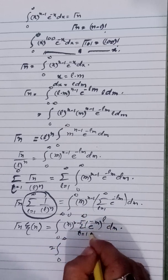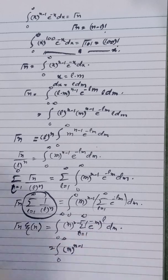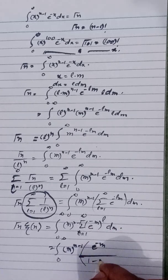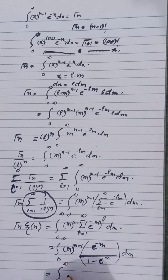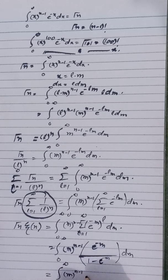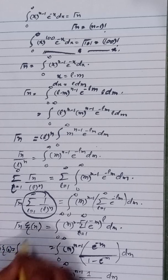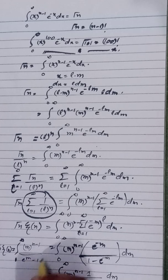The summation of e^(-lm) from l=1 to ∞ is an infinite geometric series with first term a = e^(-m) and common ratio r = e^(-m). Using the formula a/(1-r), this sum equals e^(-m)/(1 - e^(-m)). Multiplying numerator and denominator by e^m gives 1/(e^m - 1). Therefore, Γ(n)·ζ(n) = ∫₀^∞ m^(n-1)/(e^m - 1) dm. This is the relationship between the gamma function and the zeta function.